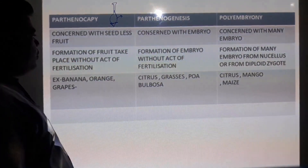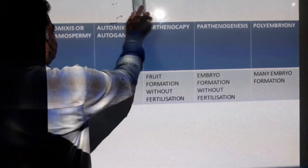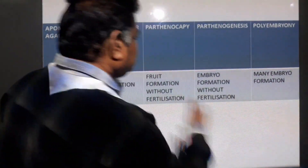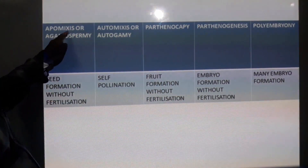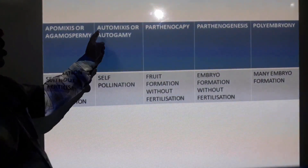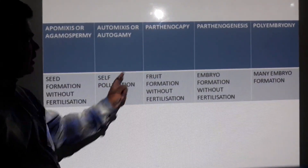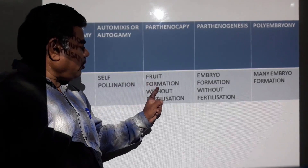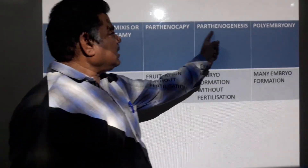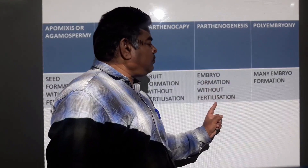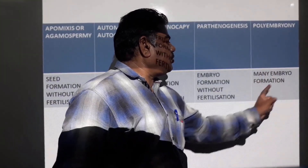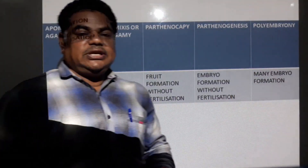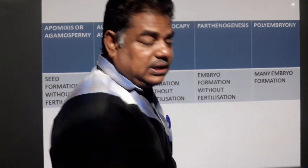To summarize all five terms: Apomyxis or Agamospermi — seed formation without fertilization. Automixis or autogamy — self-pollination. Parthenocarpy — fruit formation without fertilization. Parthenogenesis — embryo formation without fertilization. Polyembryony — formation of many embryos. This is all about Apomyxis and Polyembryony — a very important topic.